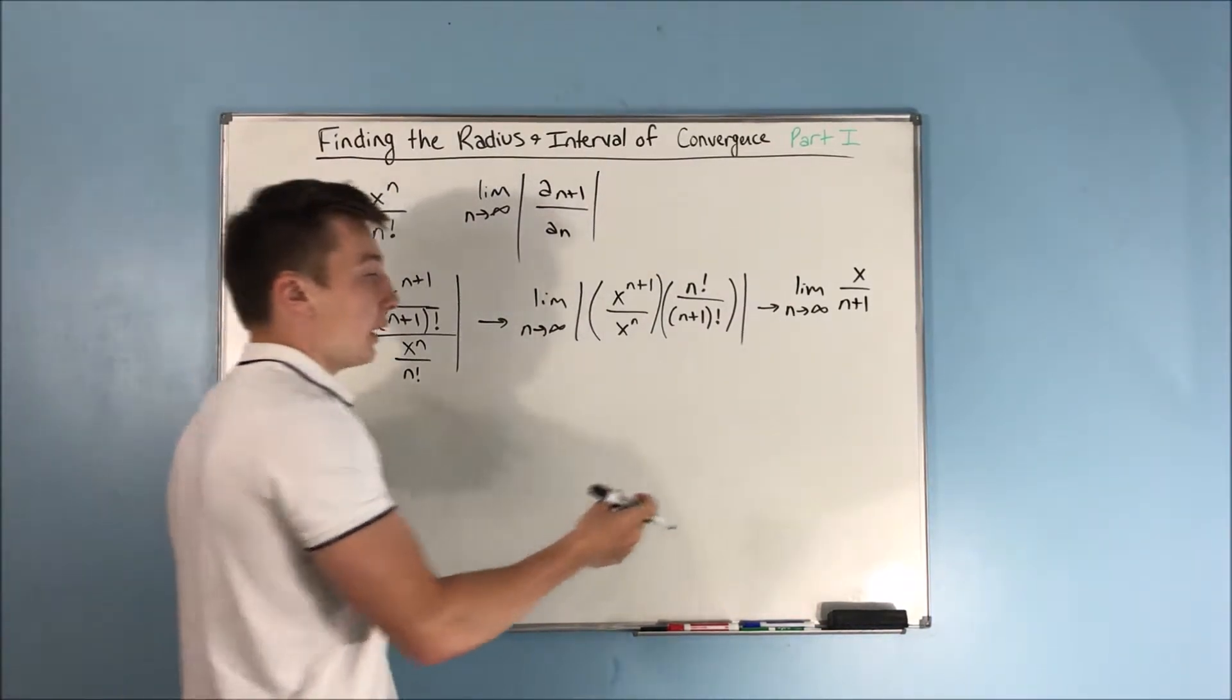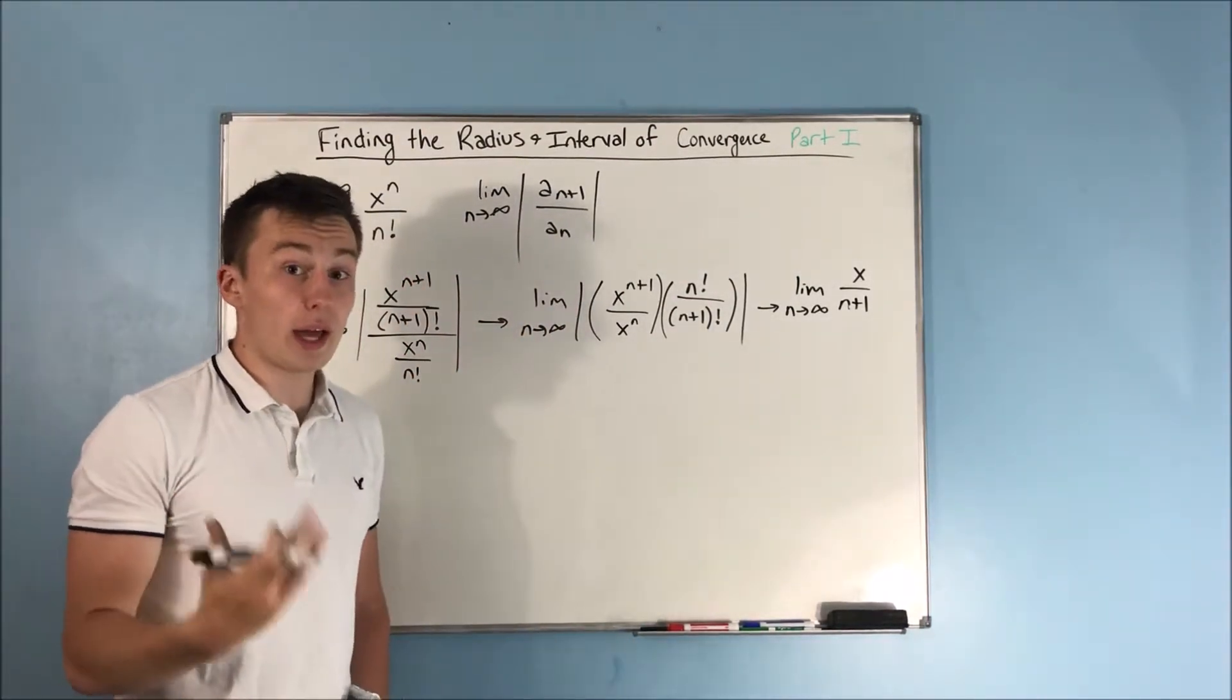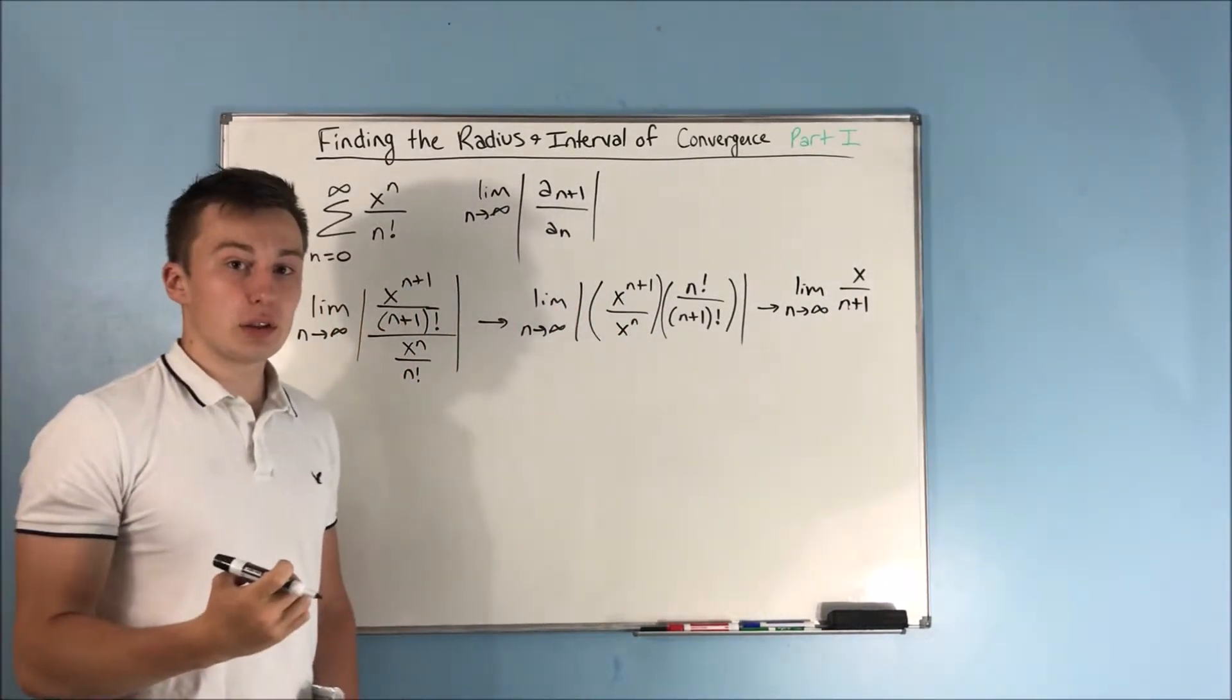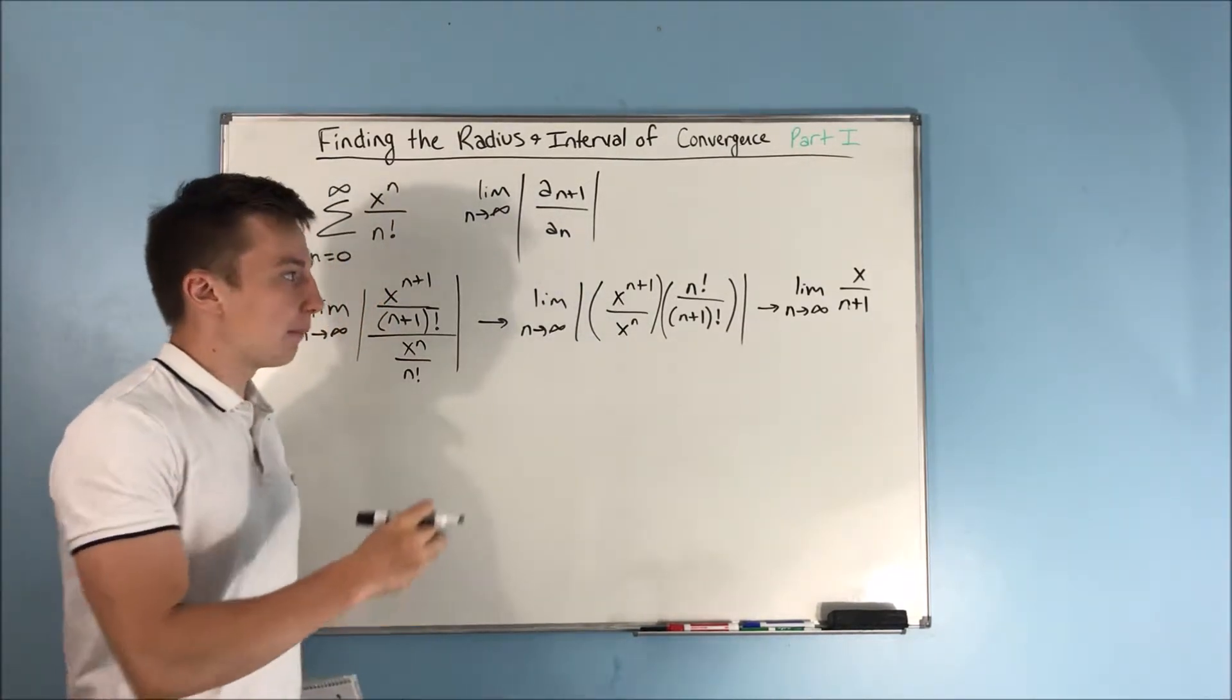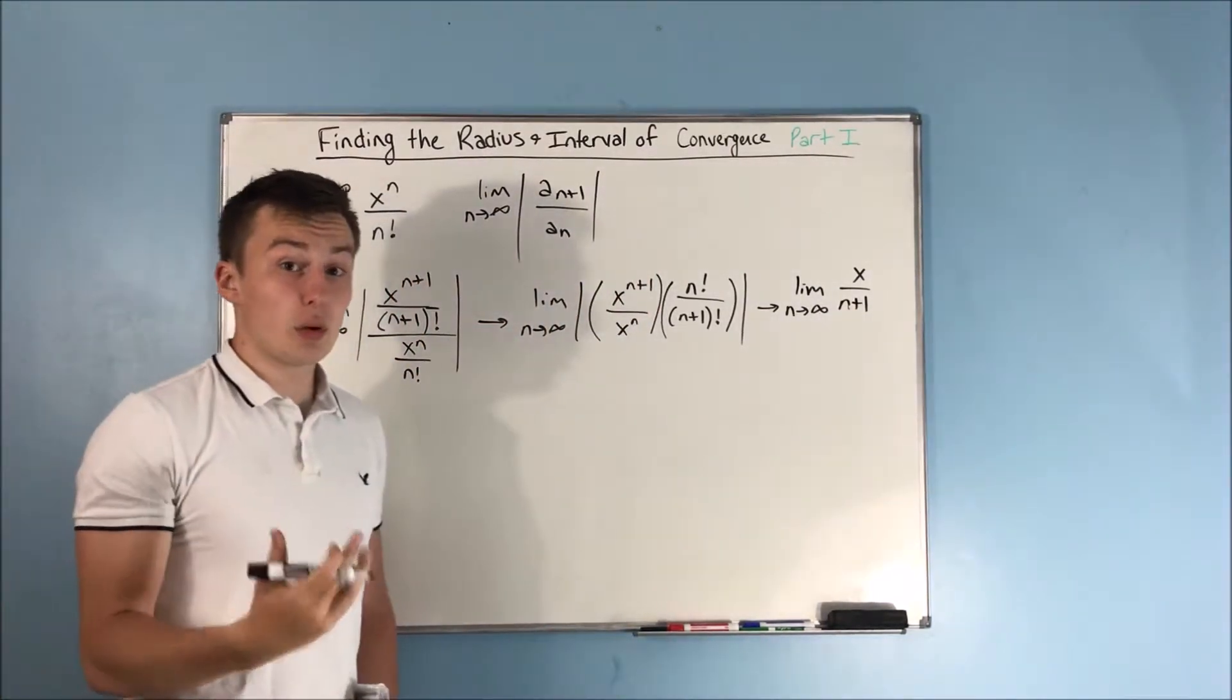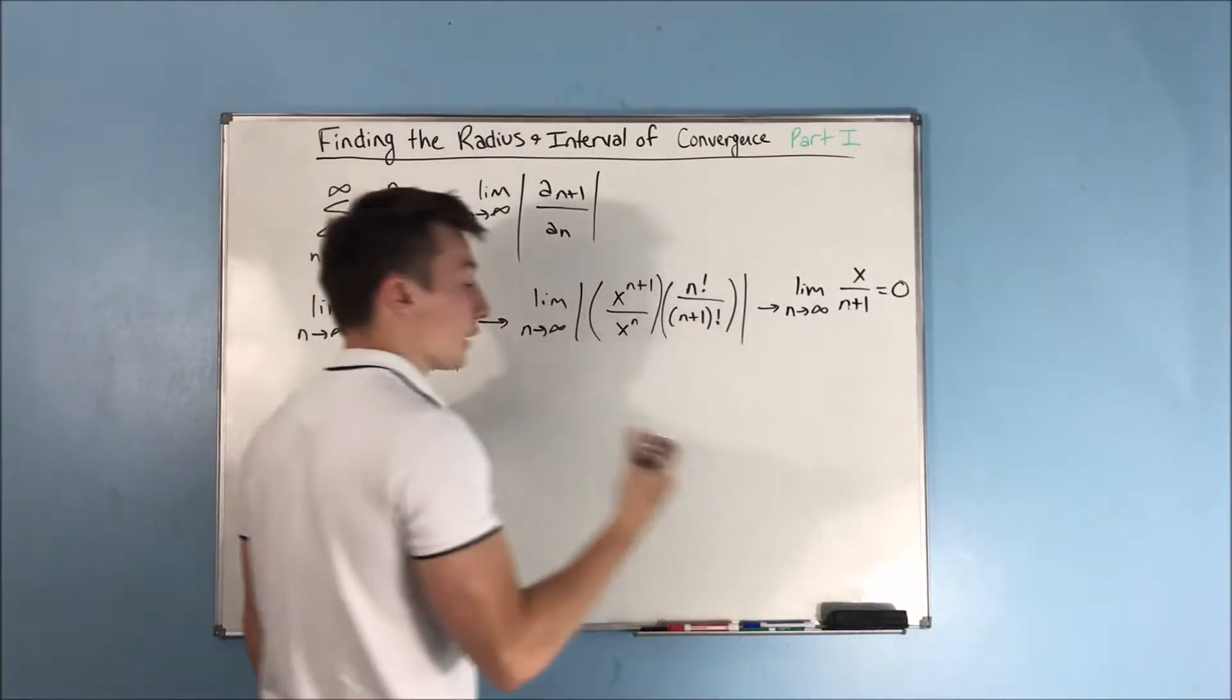Now this right here, we know that is basically going to be 0 for all x. It doesn't matter what x you're going to put on the top here, this n is still going to become infinitely large. You have to plug in a finite number. You're going to get an infinitely large denominator, and it doesn't matter what you plug in for x, you're still going to get 0, which is less than 1.